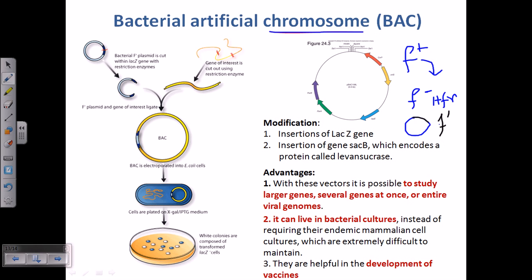We are talking about the chromosome of this F prime type of bacteria. This F prime bacterium has a plasmid-like structure containing a region for ampicillin resistance, a multiple cloning site (MCS), a selectable marker, and an origin of replication — all the necessary requirements to be a vector. It is large because it is a bacterial chromosome, not a plasmid, so it can hold a huge number of bases.